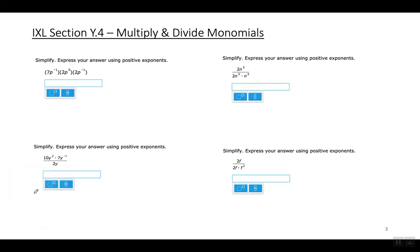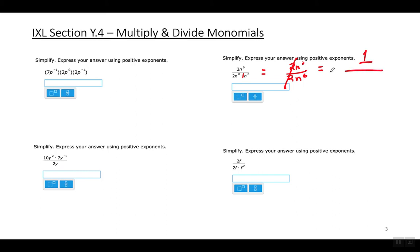For the top-right example, first simplify the bottom by multiplying what's in the denominator. On the bottom: 2 times 1 is 2, and n to the zero power times n to the sixth power is n to the sixth power. The twos cancel out, leaving a 1 on top, and n to the sixth power on the bottom.